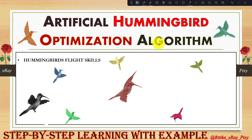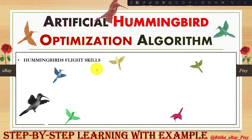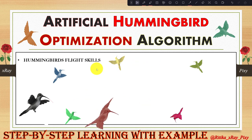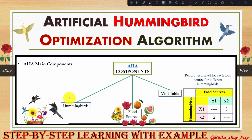Hummingbirds have unique flight skills — they can move forward, backward, up, down, and sideways. These intelligent flight skills are simulated in the Artificial Hummingbird Algorithm. The main components used in this algorithm are: first, hummingbirds; second, food sources; and third, the visit table.